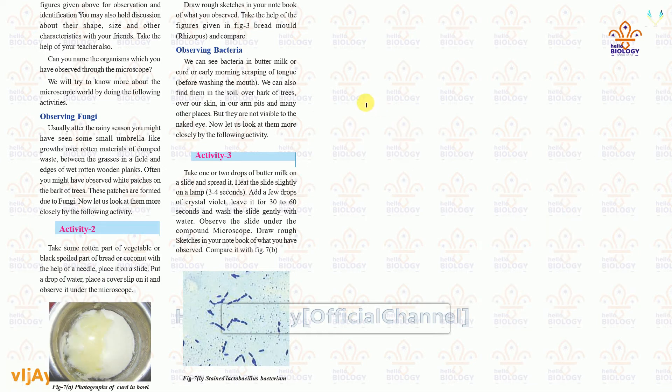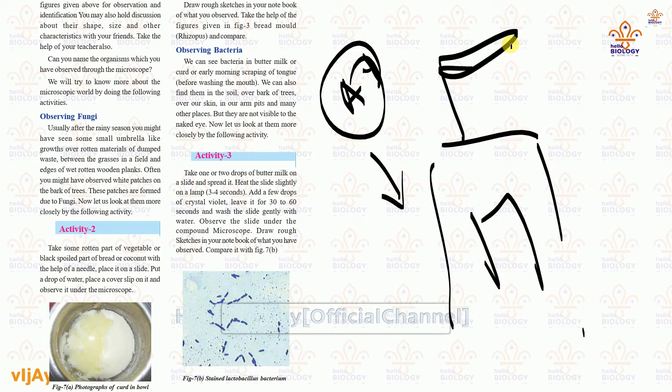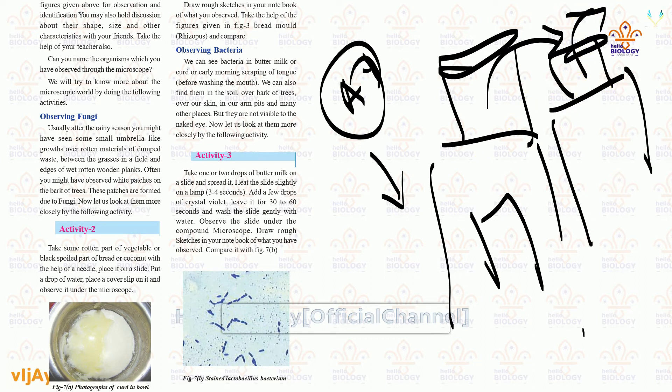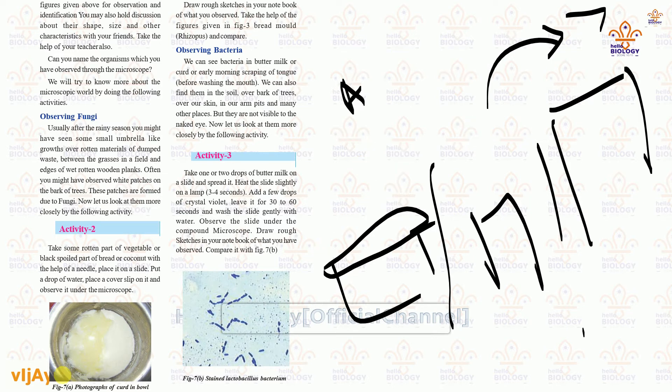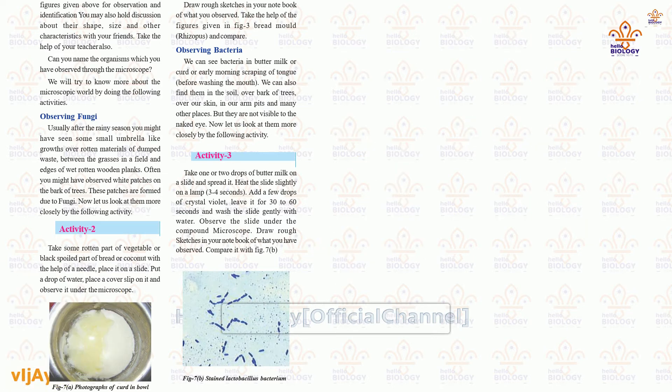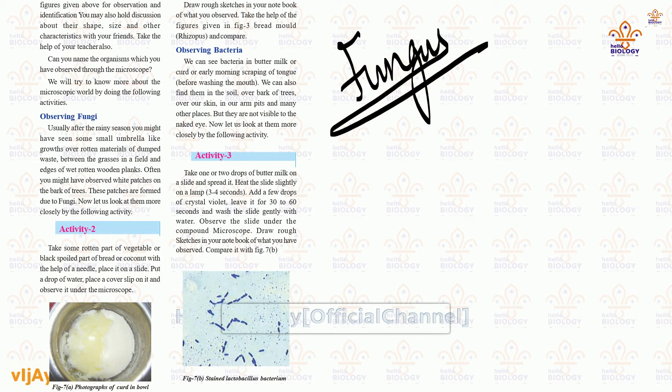We need to have microscope only. Without microscope we cannot do anything. So that is activity one. Nearby tank water or old tank, or nearby your home only, overhead tanks will be there. That also we can take the water. In the apartment will be there, apartment water will be there, tank overhead tanks will be there, or nearby old municipal water tank will be there. That water also we can take. But there is one more activity here to see fungus microorganisms.